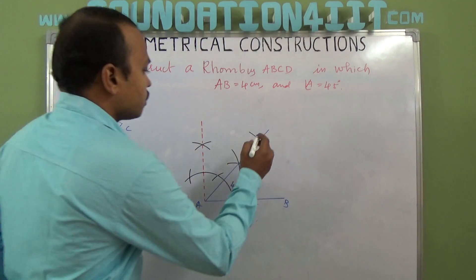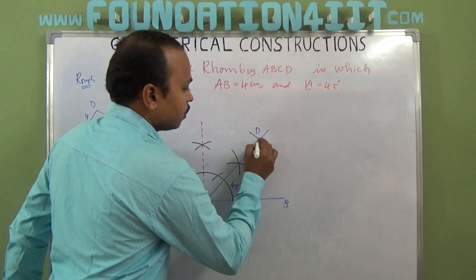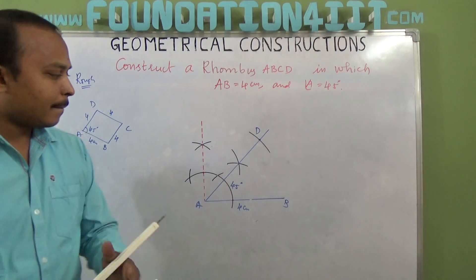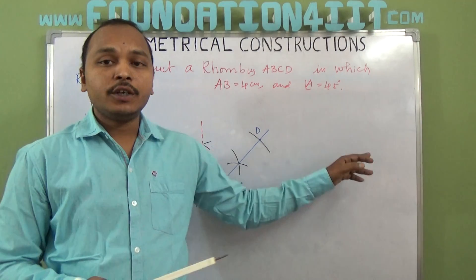A to B, now this is D. Now somewhere C is there, but B to C and D to C